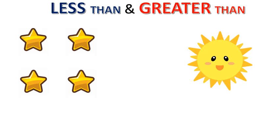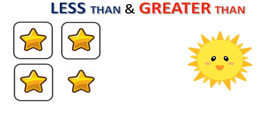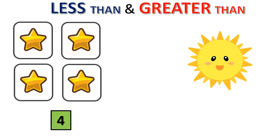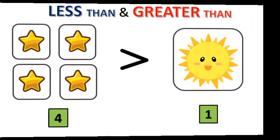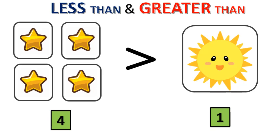Now let's consider the next example. Here we have some stars and the sun. Let's count the stars: 1, 2, 3, 4. We have 4 stars. How many suns can we see? Yes, there is 1 sun. You have to find which one is greater than and less than — whether 4 or 1. Here, 4 is greater than 1 and 1 is less than 4. The number of stars are more and the sun is less than when compared to stars, so greater than is towards the stars.